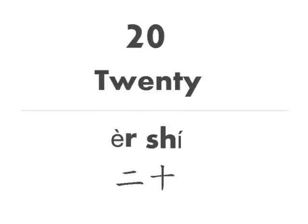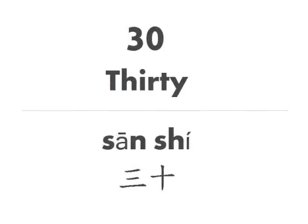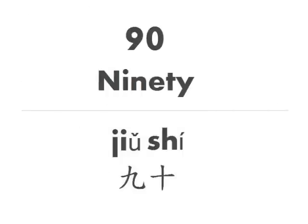To say the number 20, you would say 2, 10. Use the first form of number 2 that we learned — that is the one not for counting objects. Repeat after me: er shi. Again, 20 is 2, 10: er shi. 30 is simply 3, 10: san shi. The pattern continues through 90, which would be 9, 10.